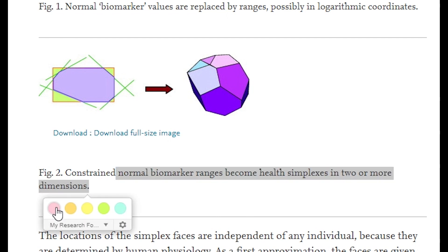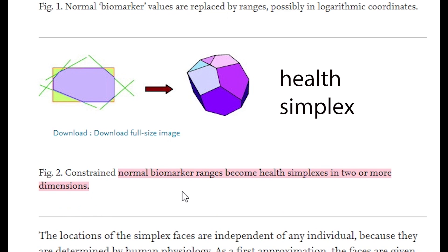So Voit refers to this as a health simplex, which could also be thought of as a high-dimensional biomarker space. If you're within the health simplex, you're, well, healthy.